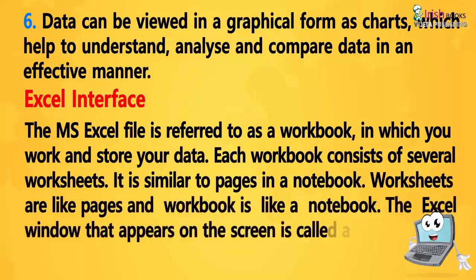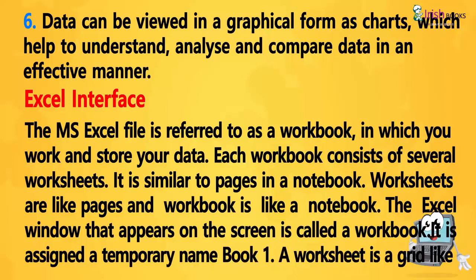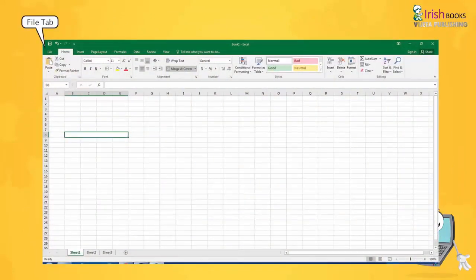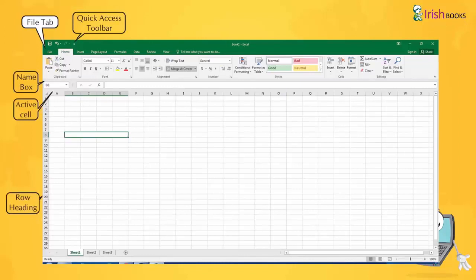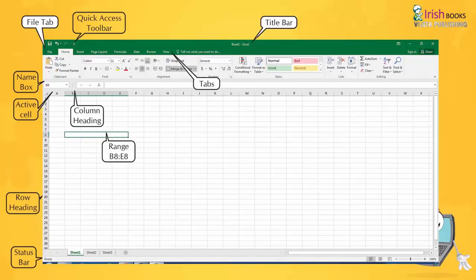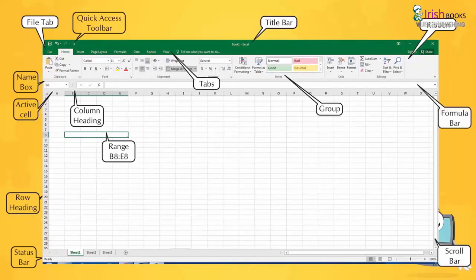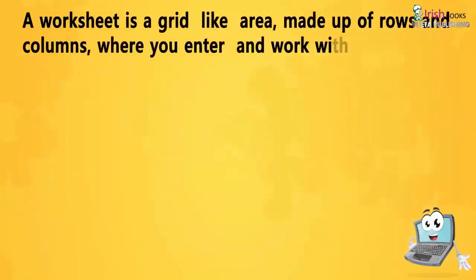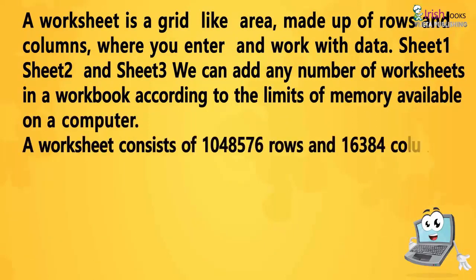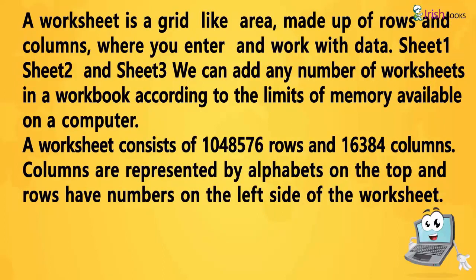Excel interface: The MS Excel file is referred to as a workbook in which you work and store your data. Each workbook consists of several worksheets — it is similar to pages in a notebook. Worksheets are like pages and a workbook is like a notebook. The Excel window that appears on the screen is called a workbook and is assigned a temporary name, Book 1. By default, an Excel workbook displays three worksheets at the bottom.